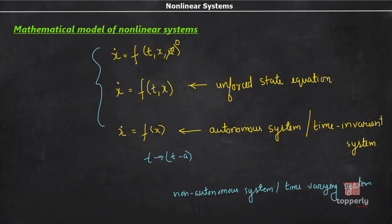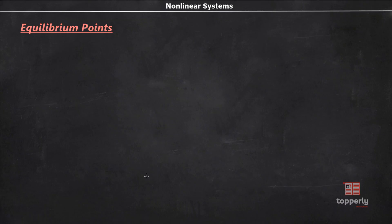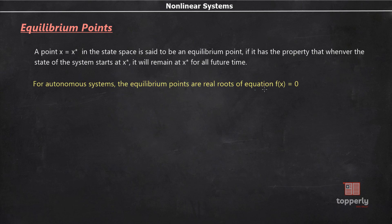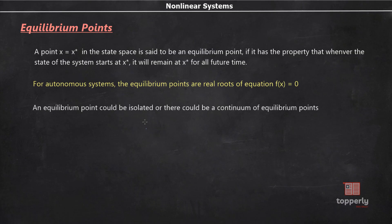Another important concept is the equilibrium point. A point x = x* in the state space is called an equilibrium point if, whenever the state of the system starts at x*, it will remain at x* for all future time. For an autonomous system, the equilibrium points are the real roots of the equation f(x) = 0. An equilibrium point could be an isolated point or there could be a continuum of equilibrium points. By isolated, I mean there are no other equilibrium points in the vicinity of that equilibrium point.